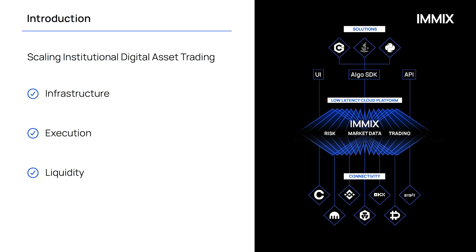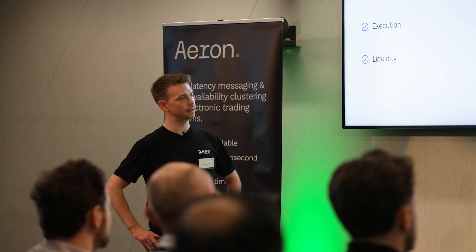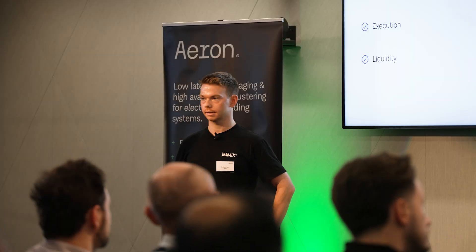Imix's mission is to scale institutional digital asset trading. We do this via developing high performance trading infrastructure at the core, and this enables two specific product lines: the first one being advanced execution, and the second one being liquidity provision type products.